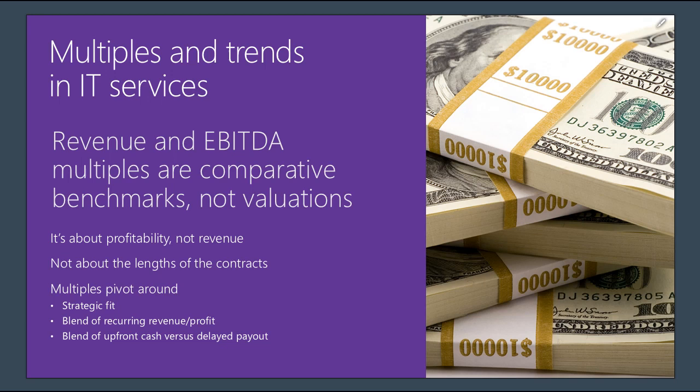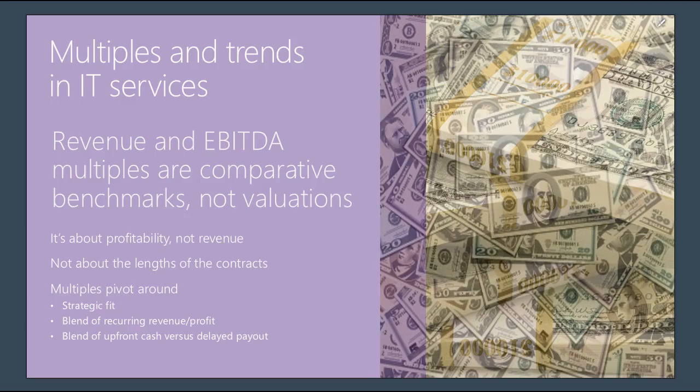Multiples can vary wildly based on deal structure. Substantial discounts are applied for an all-cash deal. Likewise, substantial premiums would be paid if there's more risk taken on behalf of a seller.